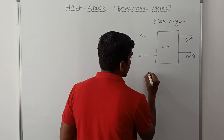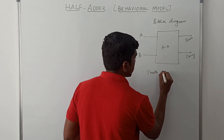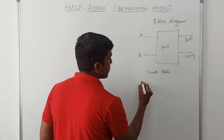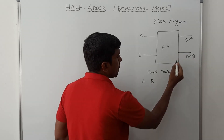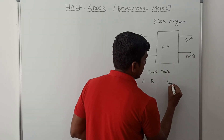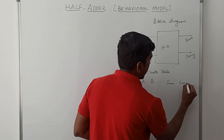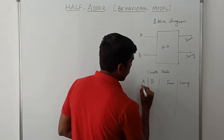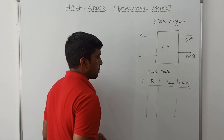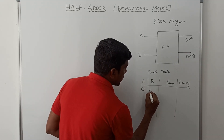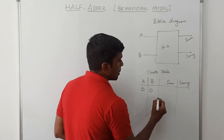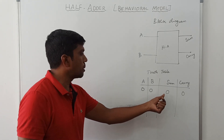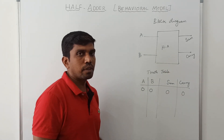Now I will write the truth table for the half adder circuit. It has two input variables A and B and two output variables sum and carry. These two input variables produce four combinations of inputs. The first combination is 0, 0 — in this case, sum value is 0 and carry value is 0.